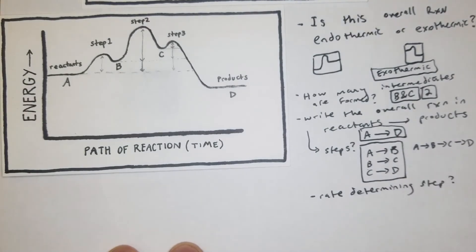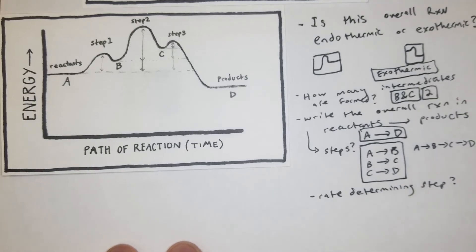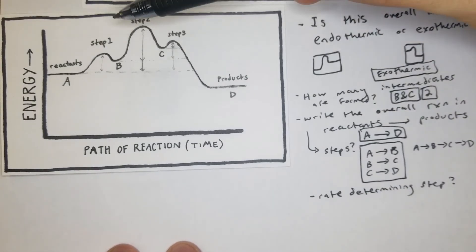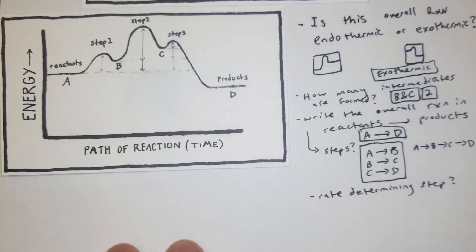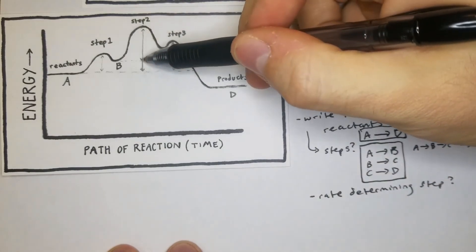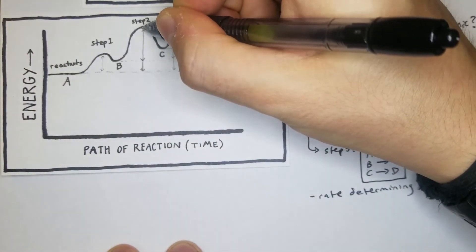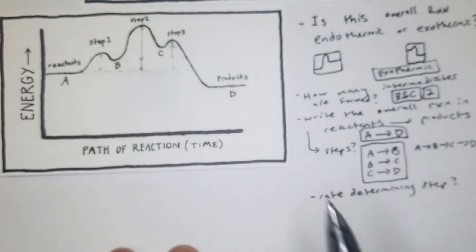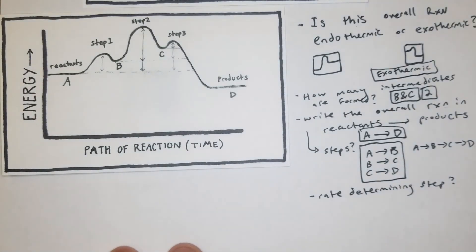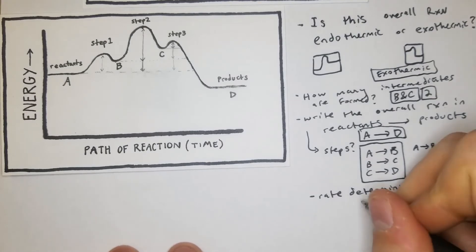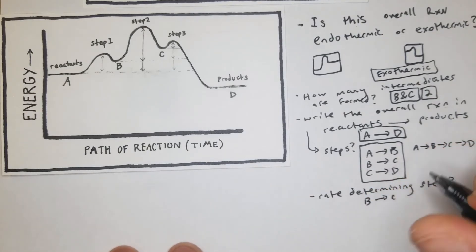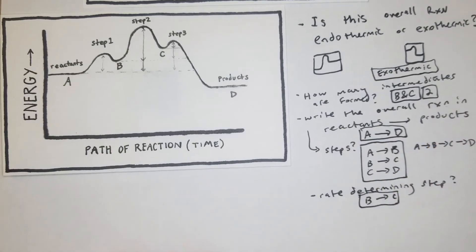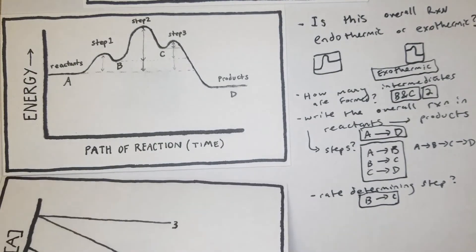For the rate-determining step, we can approximate the activation energy without calculations. Step two clearly has the greatest activation energy — measured from the new baseline after step one up to the peak of step two. So the rate-determining step is B to C, because it requires the most activation energy.